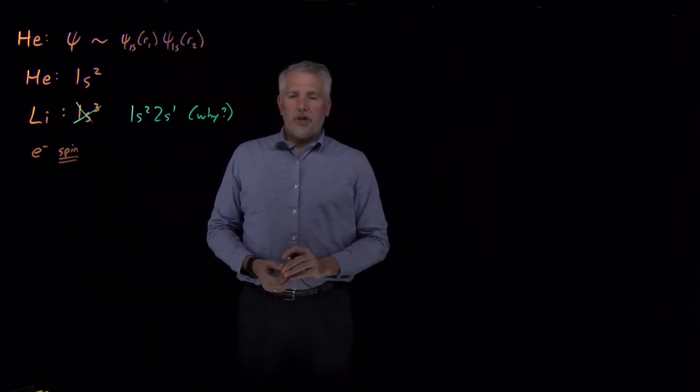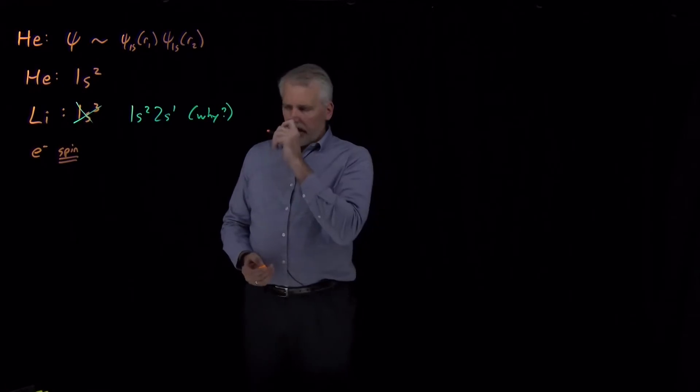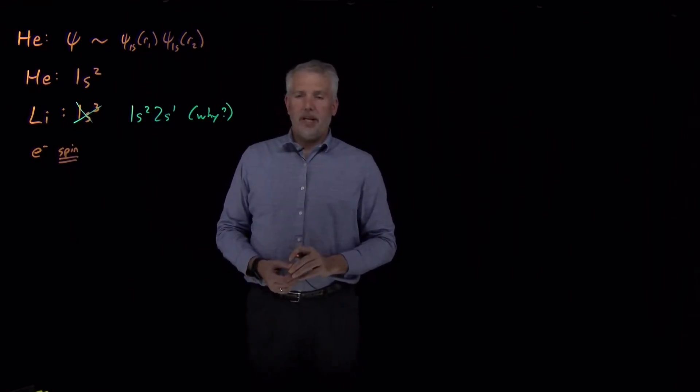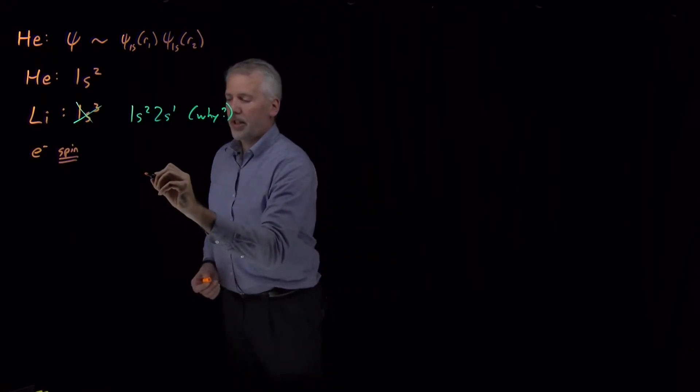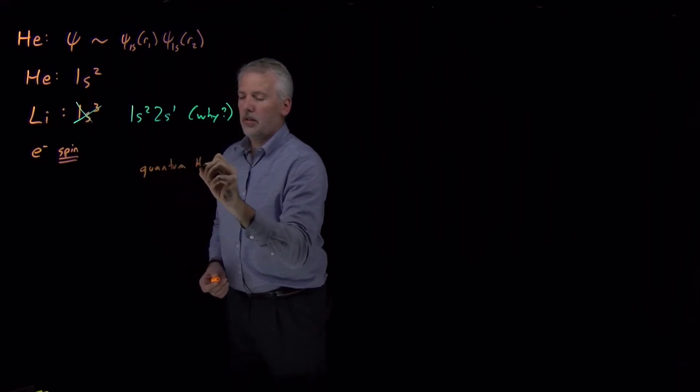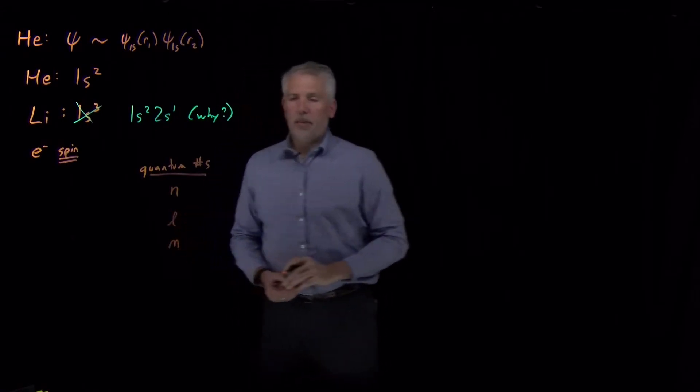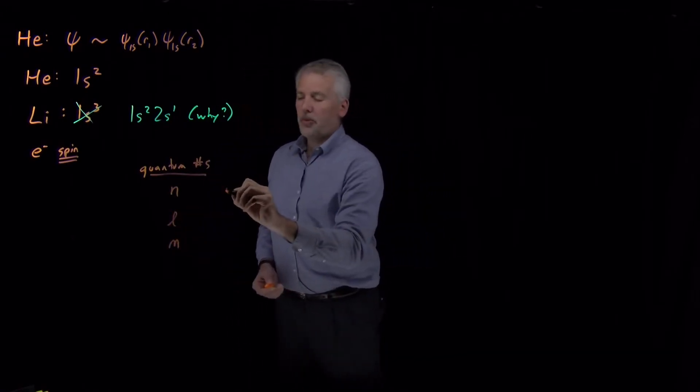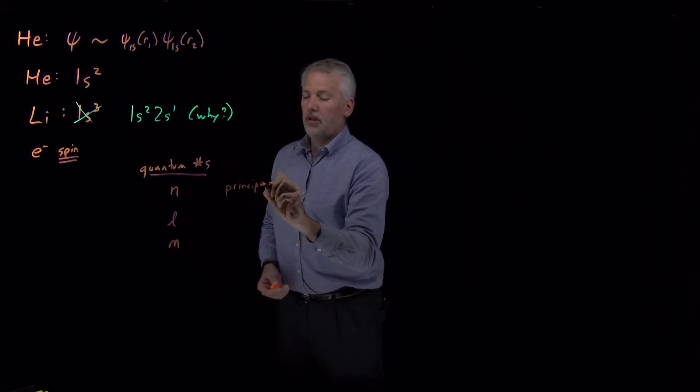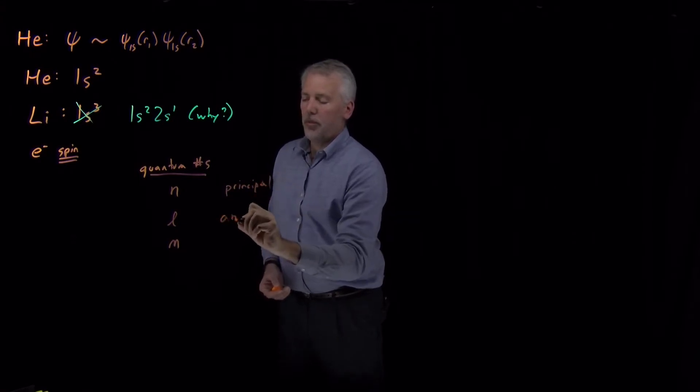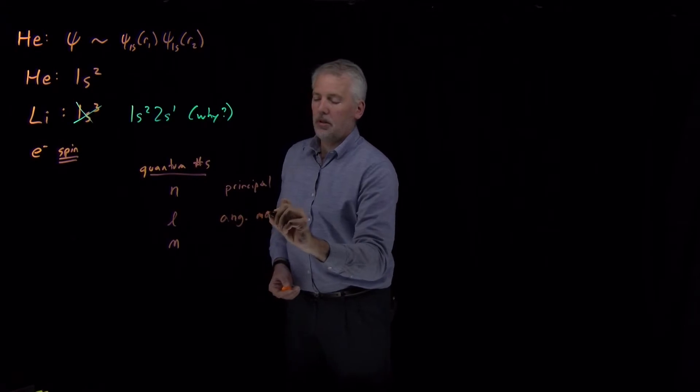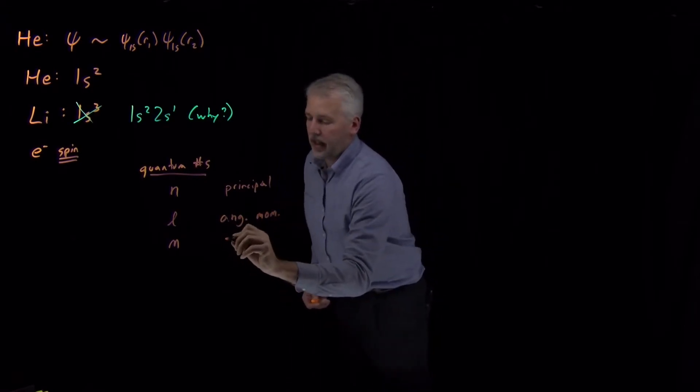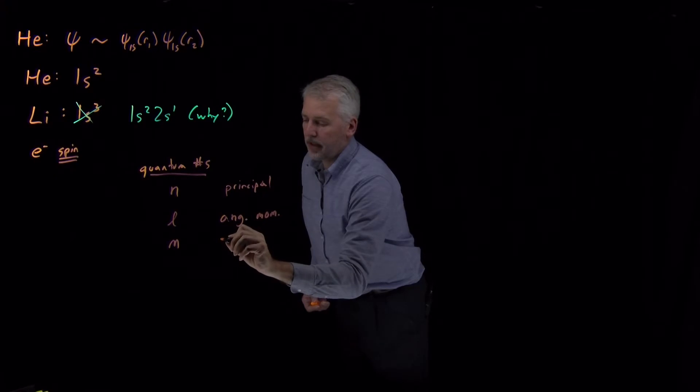To understand what we mean when we talk about spin of an electron: spin is just another quantum number, just like the n, l, and m quantum numbers for the hydrogen atom electrons that we've talked about so far. To summarize, we've talked about n being the principal quantum number, l being the angular momentum quantum number, and m being the magnetic quantum number.